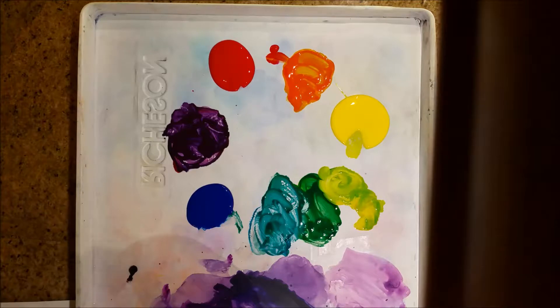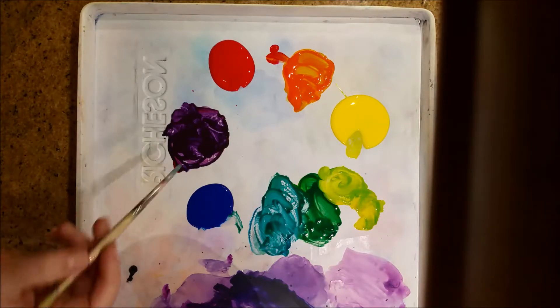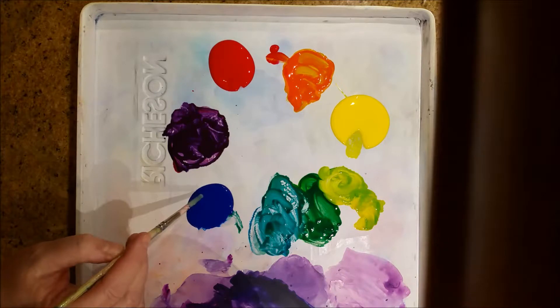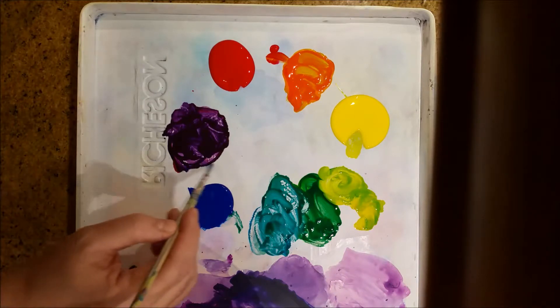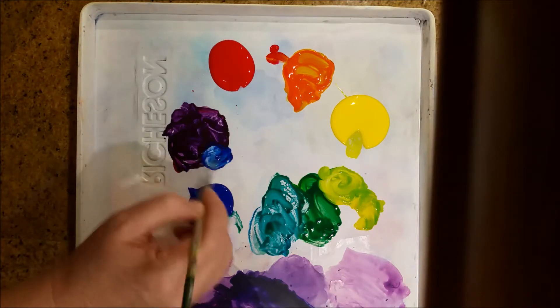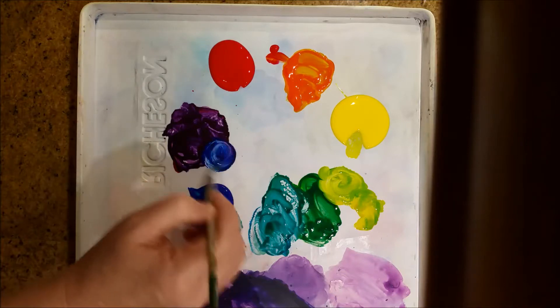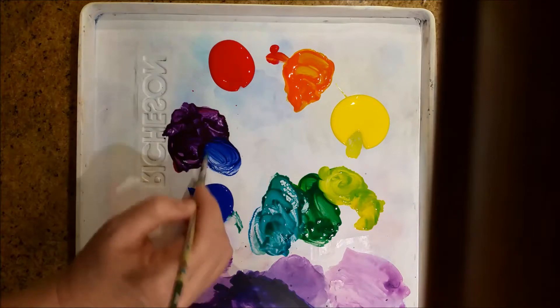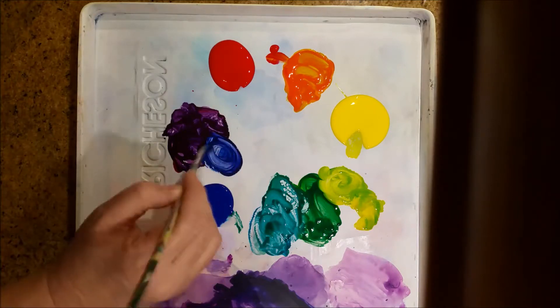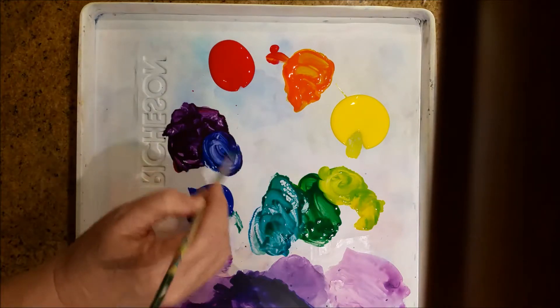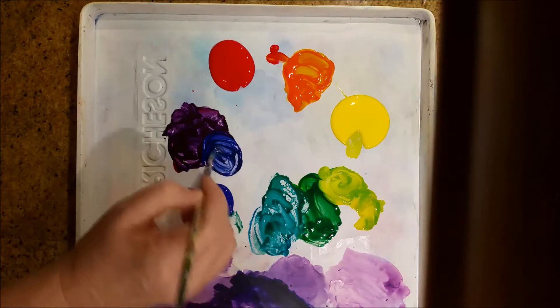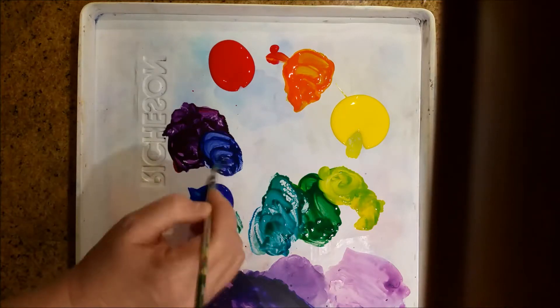Let's just continue to go around the wheel. So, the next one would be blue-violet. I'm going to take some of this blue and put it over here with this violet. You can see I get a nice purple or blue-violet color here.